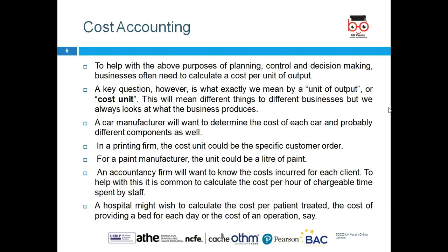Cost accounting helps with planning, control, and decision making. Businesses need to calculate cost per unit. The cost unit means different things to different businesses — healthcare, social care, and manufacturing can all be different. We always look at what the business produces. A car manufacturer determines the cost of each car; in a healthcare environment, we look at the cost of each piece of equipment and its components.